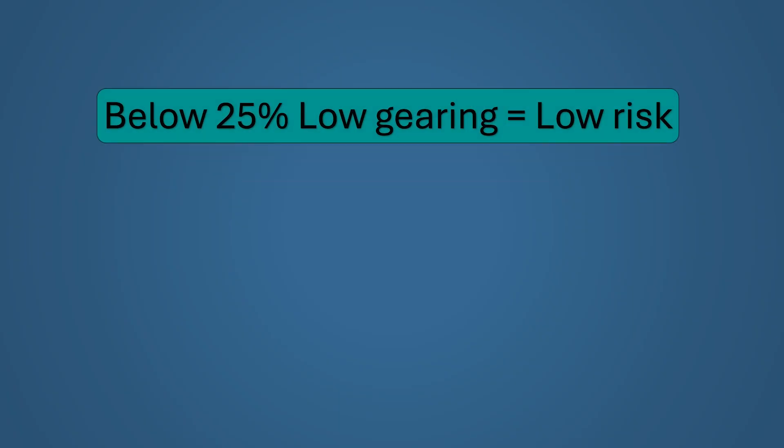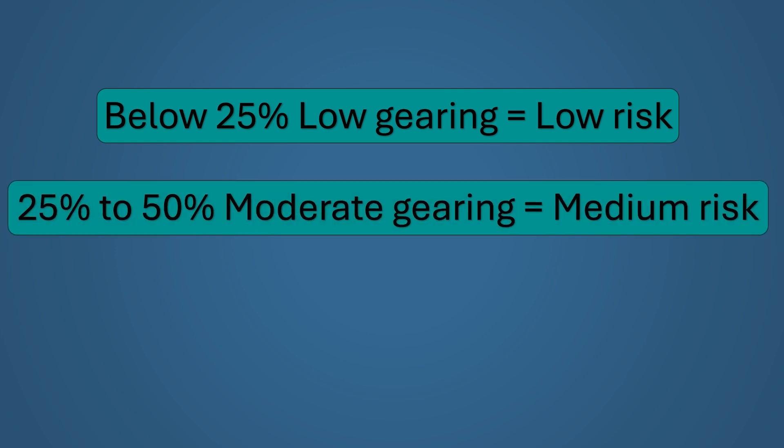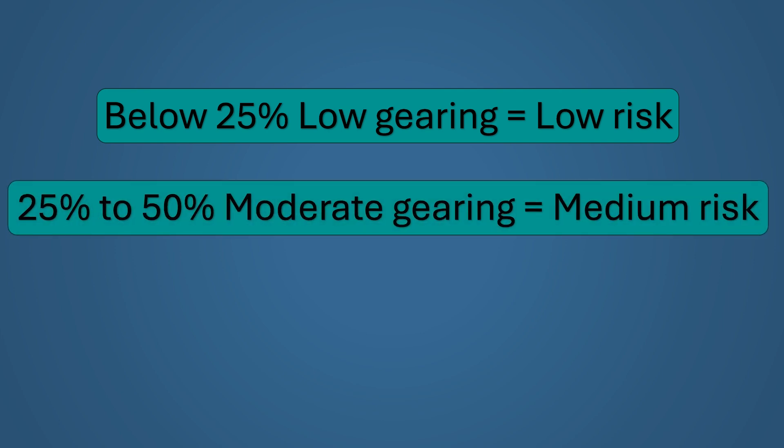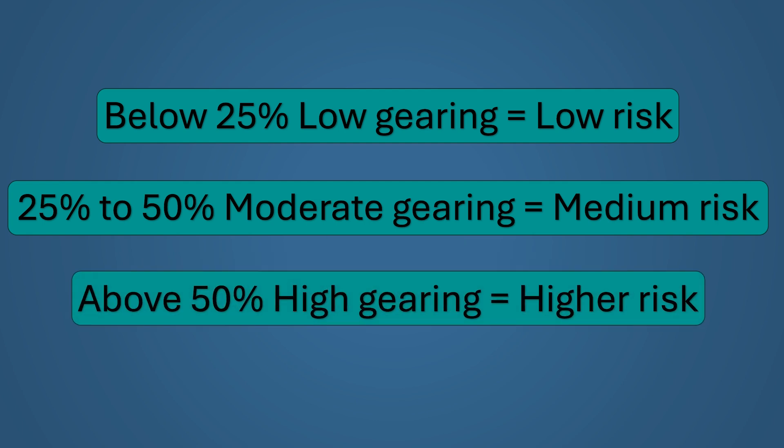These are general bands because it does vary between industries, but a good base to work off is: below 25% is low gearing and low risk; 25% to 50% is moderate gearing and medium risk.